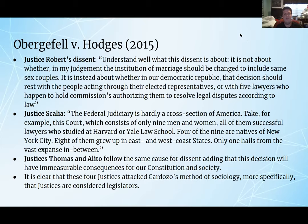In Justice Roberts' dissent, he clarified that it was not about whether the institution of marriage should be changed to include same-sex couples, but about whether in a democratic republic that decision should rest with people acting through their elected representatives, or with five lawyers who happen to hold commissions authorizing them to resolve legal disputes according to law. Justice Scalia noted that the federal judiciary is hardly a cross-section of America, pointing out that the court consisted of only nine men and one woman, all successful lawyers who studied at Harvard or Yale Law School, with four of the nine being natives of New York City and eight of them having grown up in east or west coast states. Justices Thomas and Alito added that this decision would have immeasurable consequences for the Constitution and society. It is clear that these four justices attacked Cardozo's method of sociology, specifically the notion that justices are considered legislators.